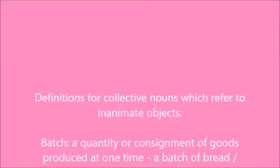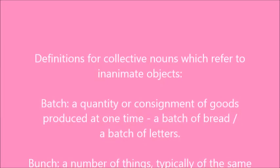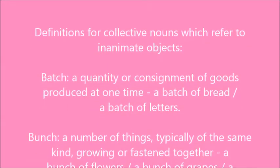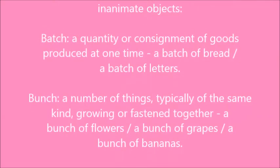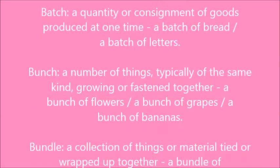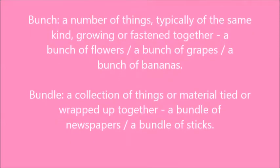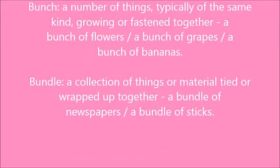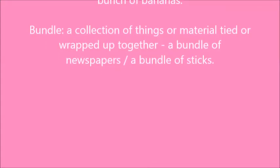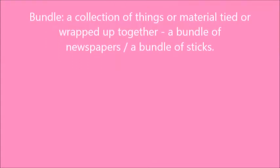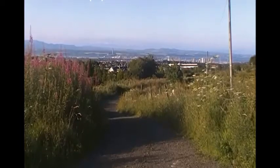Definitions for collective nouns which refer to inanimate objects. Batch: a quantity or consignment of goods produced at one time — like a batch of bread or a batch of letters. Bunch: a number of things, typically of the same kind, growing or fastened together — a bunch of flowers, a bunch of grapes, a bunch of bananas. Bundle: a collection of things or material tied or wrapped up together — a bundle of newspapers, a bundle of sticks.